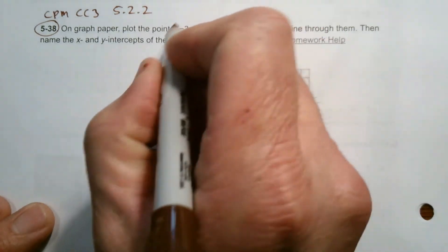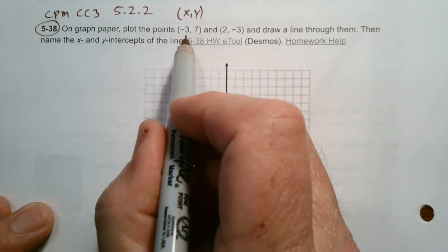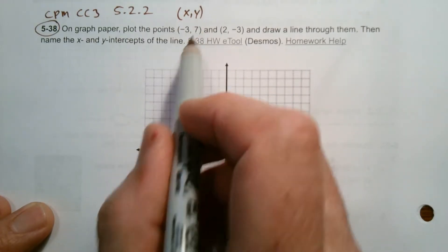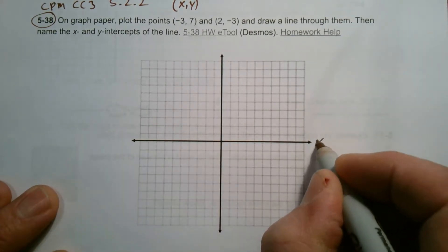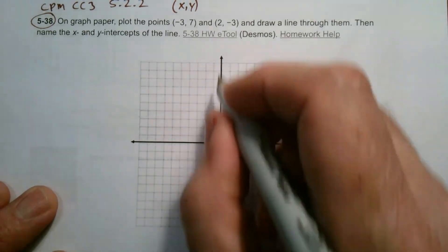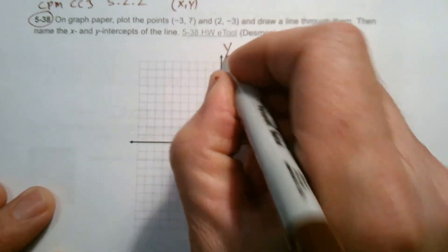So keep in mind when you're given a point, remember points are always X comma Y, right? It's your X and then your Y. So my X is negative 3, my Y is 7. And so the other thing you got to remember is the horizontal axis is the X axis. The vertical axis is the Y axis.